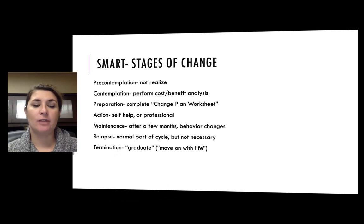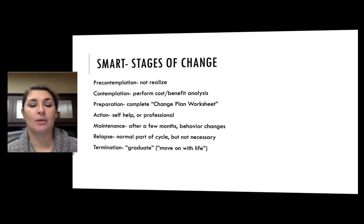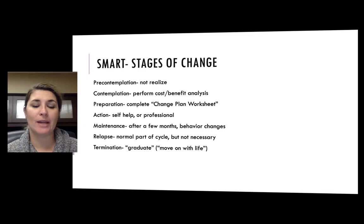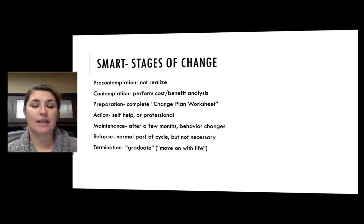The SMART stages of change application: In pre-contemplation, the individual has not realized that they have a problem. In the contemplation stage, the individual performs a cost-benefit analysis about the continued use of their addiction, behavior, or substance. In the preparation stage, the individual will complete the change plan worksheet, available online. In the action stage, the individual can focus on either self-help or seeking a professional. In the maintenance stage, the individual will be encouraged to focus on what behavior changes have been made over the course of a few months of abstinence. Relapse is then viewed as a normal part of the cycle, but the individual may not have one. Termination — an individual will graduate and move on with life. The average is between six months and two years seeking meetings. However, lifetime membership or attendance is not mandatory or encouraged; this decision is viewed as an individual choice.